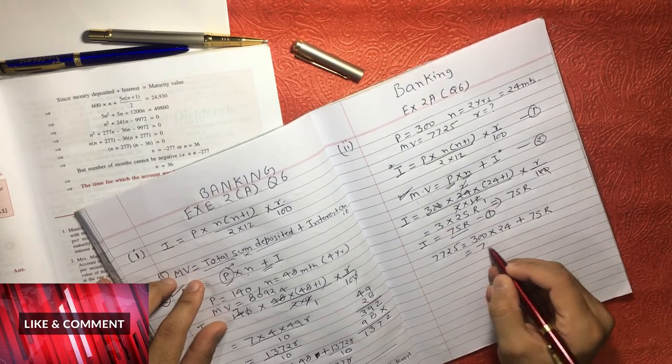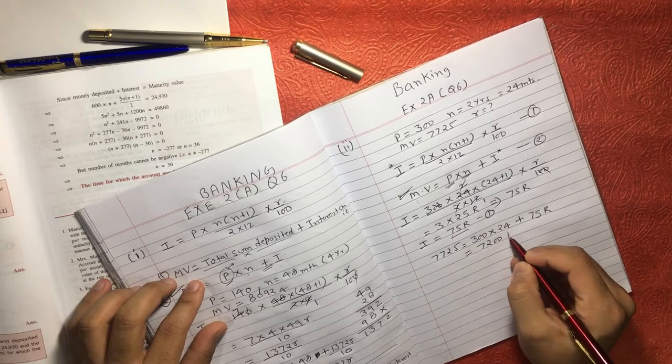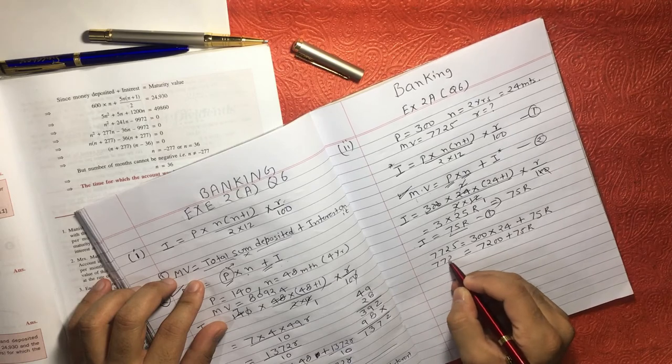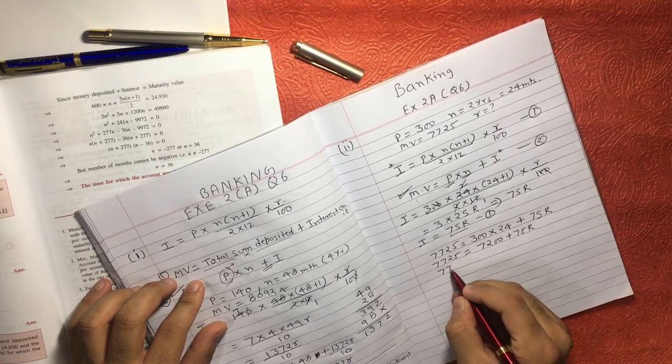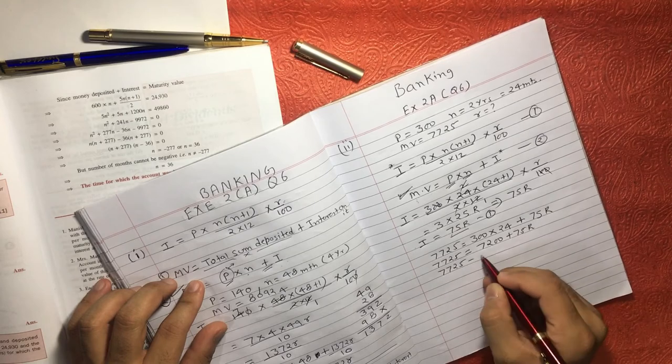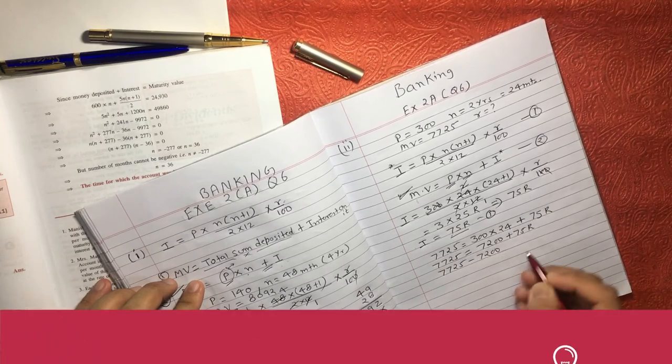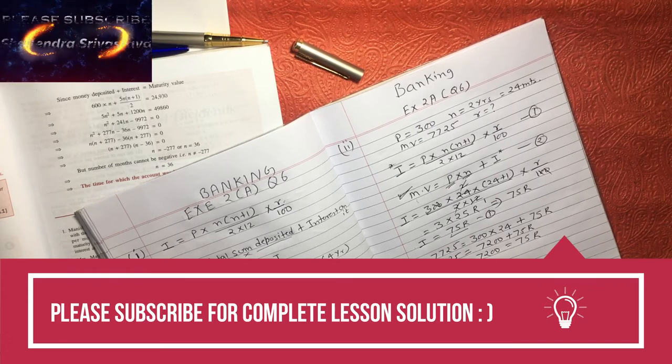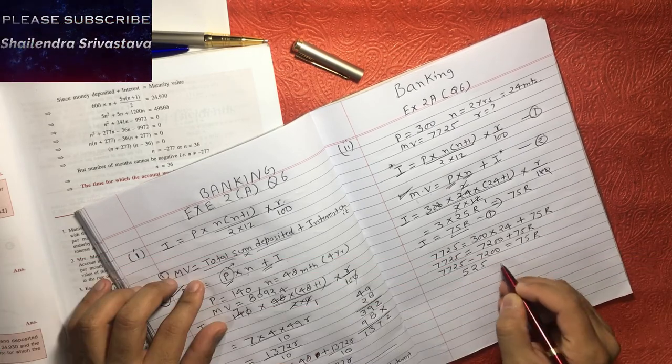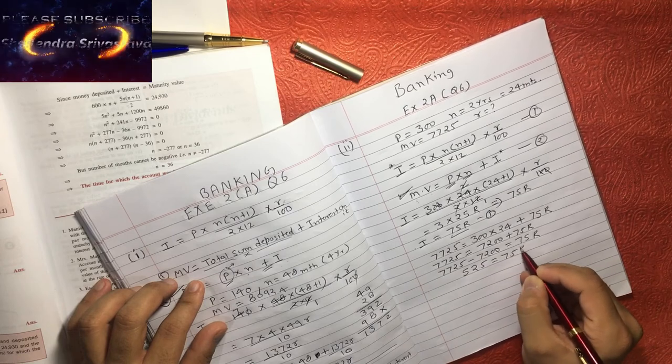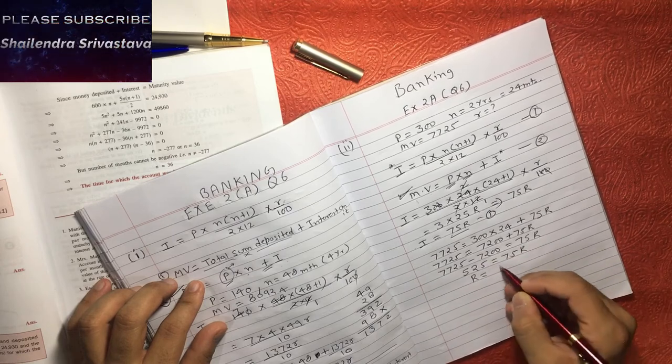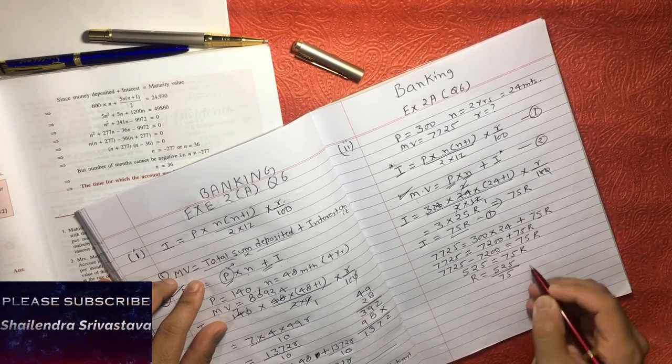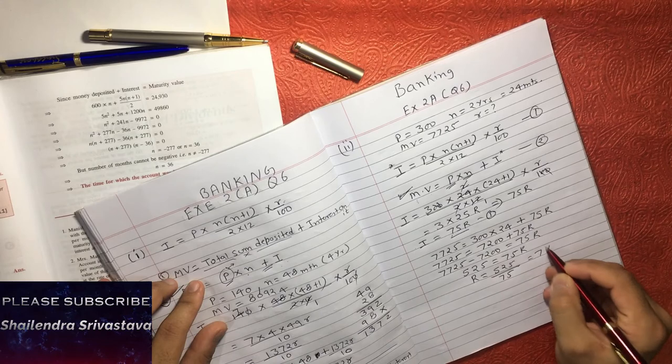So 300 into 24 that will come 7200 plus 75R and that is 7725. We can solve this: 7725 minus 7200 is equal to 75R, that will become 525 is equal to 75R, and R is equal to 525 oblique 75 is equal to 7 percent.